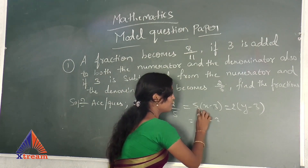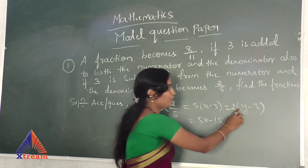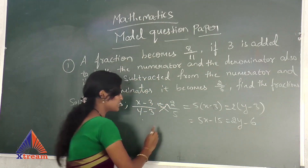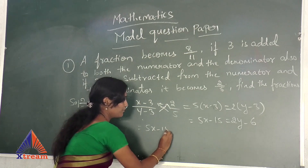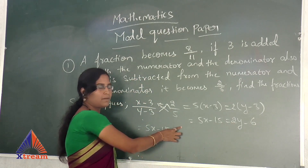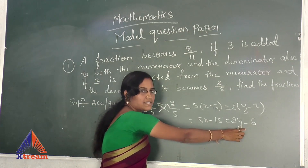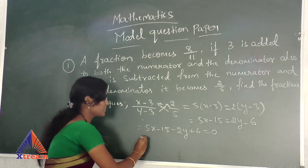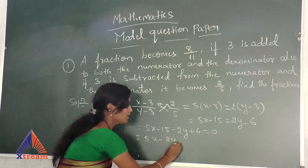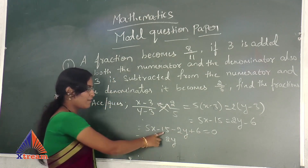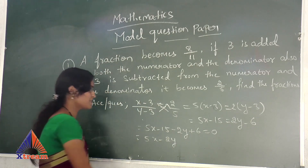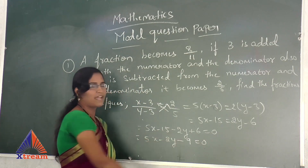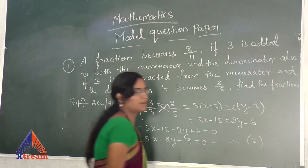Remove the brackets by multiplying: 5X minus 15 equals 2Y minus 6. Bring all terms to one side. 5X minus 2Y. For the constants, minus 15 and plus 6: since 15 is the bigger number with a minus sign, 15 minus 6 gives 9, so it becomes minus 9. This gives 5X minus 2Y minus 9 equals 0. This is equation number 2.